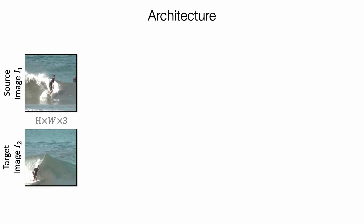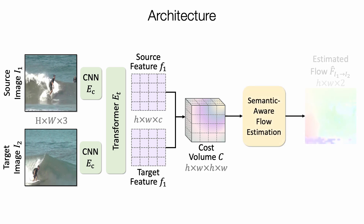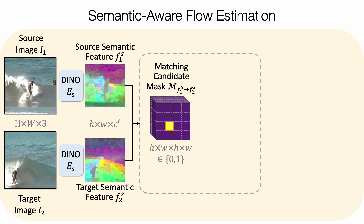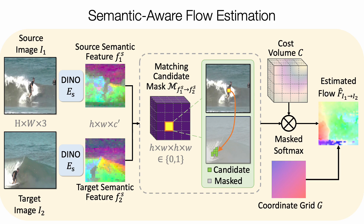Now let me dive into the details of our model architecture. Given a pair of source and target images, we first use a convolutional neural network to extract image features, and use a transformer network to correlate the features and produce correspondence-aware features for both source and target images. Then we compute a cost volume from the features and design a semantic-aware flow estimation module to estimate the flow. The semantic-aware flow estimation utilizes the semantic features from the pre-trained Dino encoder. We compute a matching candidate mask for each feature point in the source, containing feature points on the target image with the closest semantic features. By computing the masked softmax on the cost volume with the matching candidate mask, we utilize robust coarse correspondence from the pre-trained semantic encoder while estimating fine-grained correspondence.